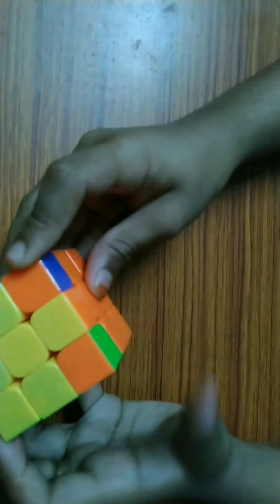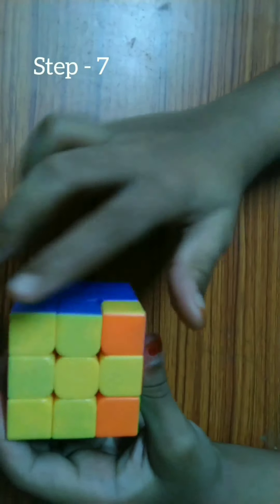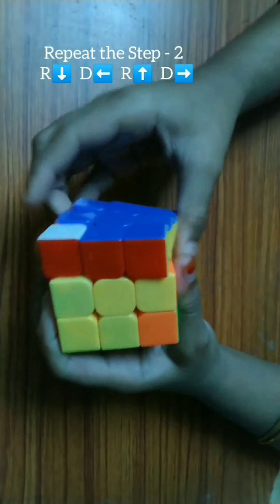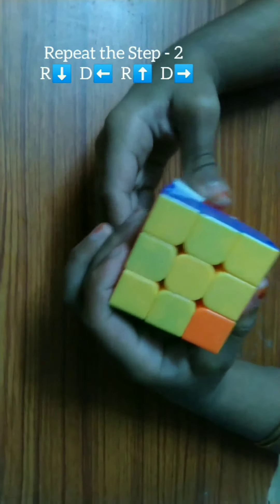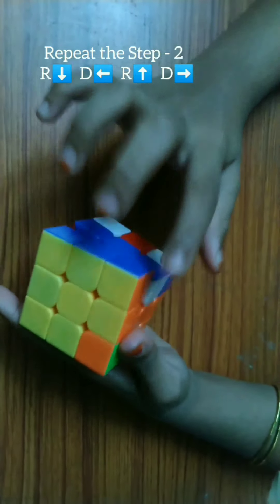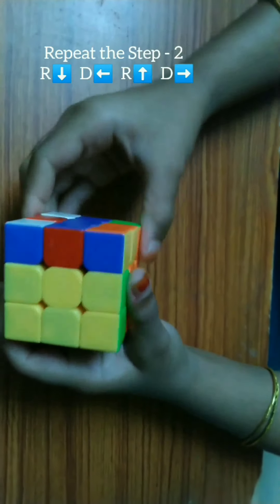See, we have got two in the correct position. These two are in the correct position but wrong orientation. So, do the same step. But after completing it, move the wrong one into the right side and repeat this step.